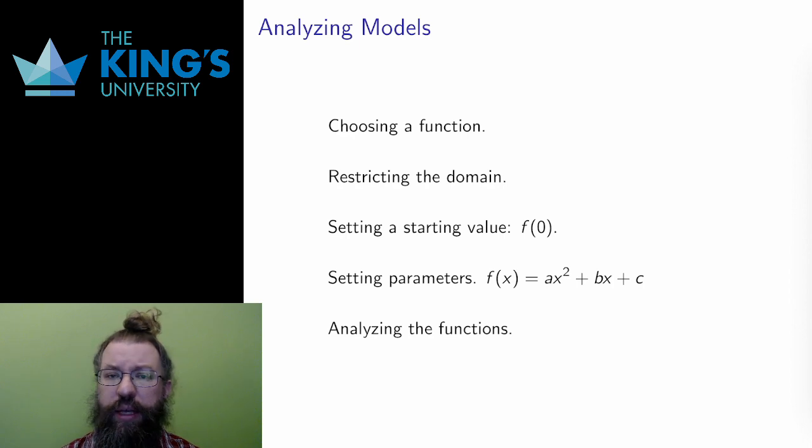I can think about the domain. Even though a function might mathematically have a large domain, not all of that domain might be reasonable for the model. If the input to a function is a population, then the input must be positive. Negative population makes no sense. Also, there is probably a maximum possible input, putting an upper bound on the domain. These are restrictions to the domain that come from the real-world situation.